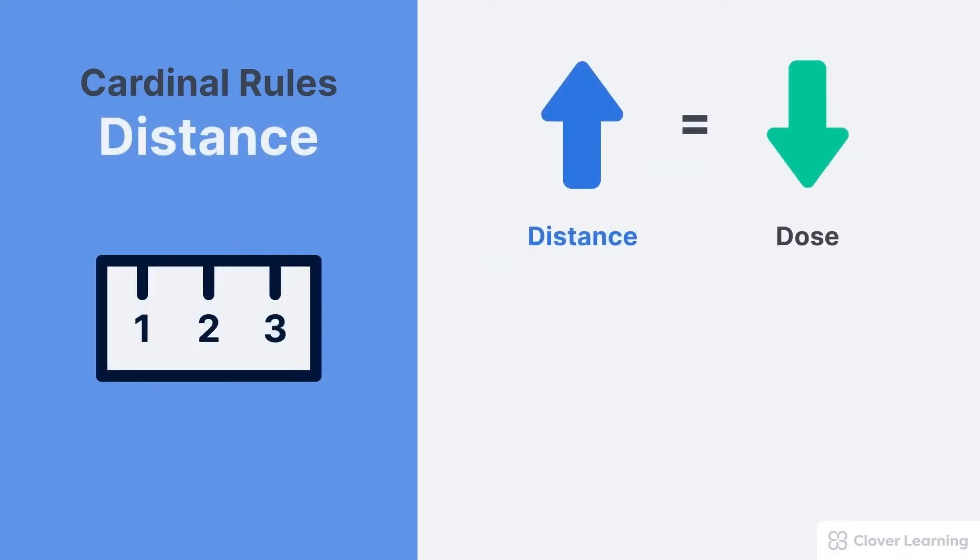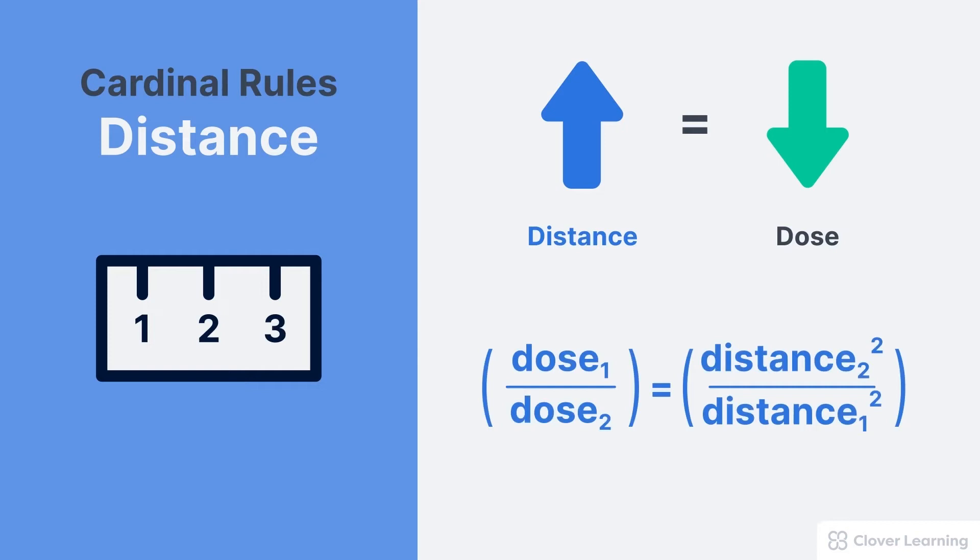Distance is the second cardinal rule of radiation protection. An operator should always maximize their distance between themself and the radiation source. In other words, increasing the distance decreases the radiation dose. In fact, distance has an enormous influence on radiation dose because it follows the inverse square law.